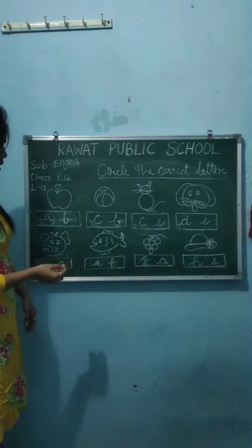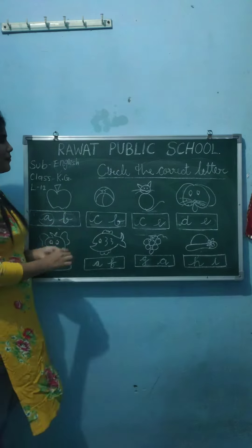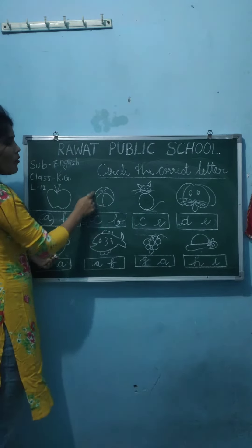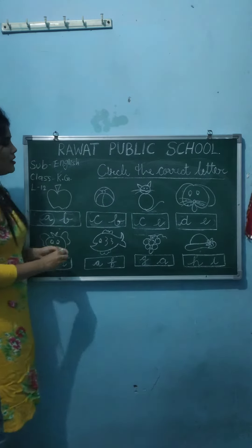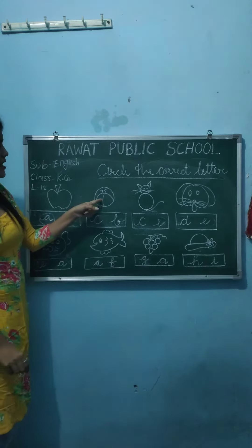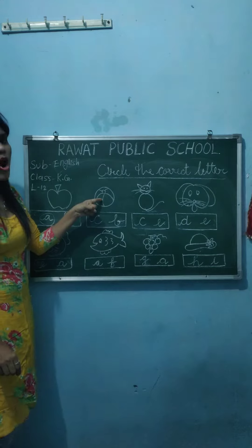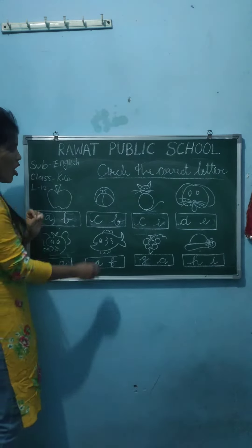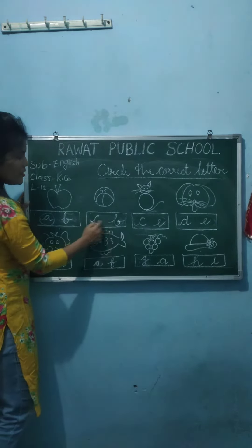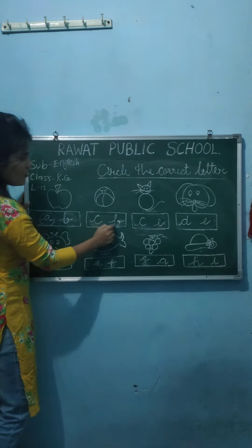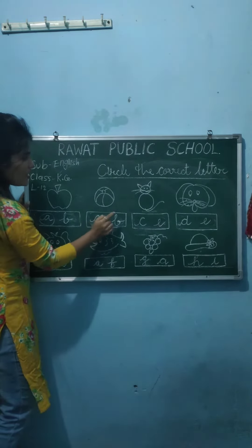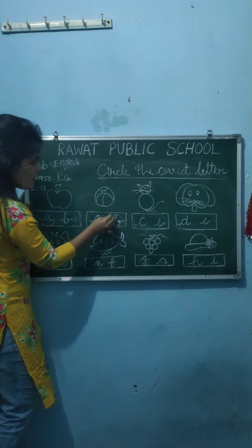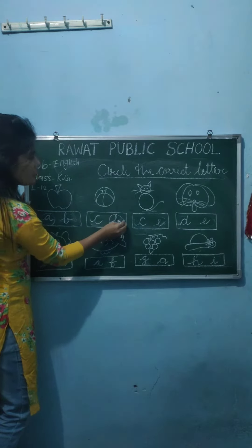Now next, B for ball. What is this? This is ball. B for ball. Where is B? Which one is B? Here. Make a circle.